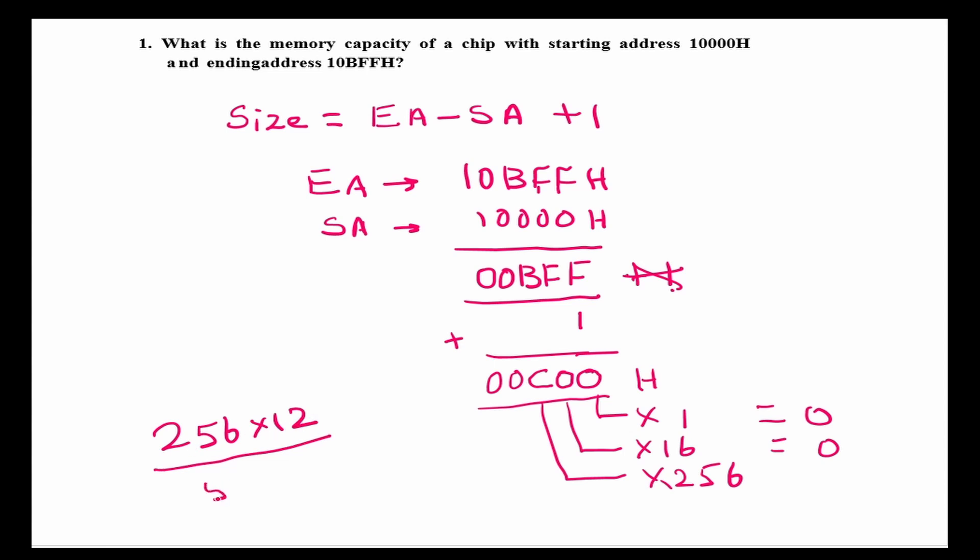So, 2 into 256, 5, 12. 1 into 256, 256, 2, 7, 0, 3. So, this will be equal to 3072.